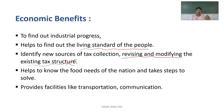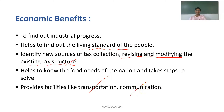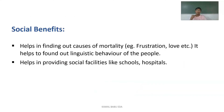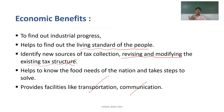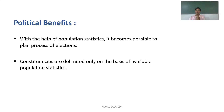Economic benefits also help us know the food needs of the nation and take steps to solve them — whether people can afford their own food or whether the government needs to provide it. Additionally, economic statistics help in providing facilities such as transportation and communication. From social and economic data, we can then move to political benefits.